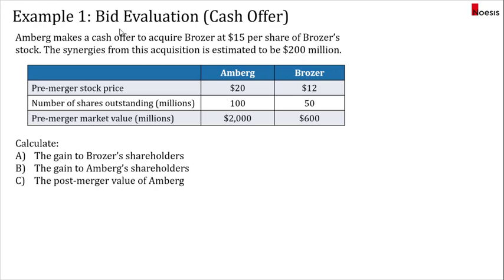Now let's look at Example 1, where the bid is made as a cash offer. Emberg makes a cash offer to acquire a company called Browser at $15 per share of Browser's stock. The synergies from this acquisition are estimated to be $200 million. The pre-merger stock price of Emberg is $20 per share and Browser's is $12 per share. Emberg has 100 million shares outstanding and Browser has 50 million shares outstanding. So the pre-merger market values are $2,000 million for Emberg and $600 million for Browser.